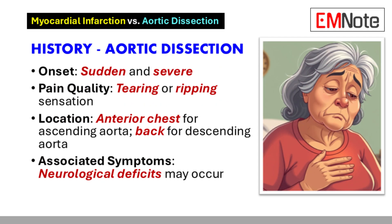In contrast, aortic dissection presents with sudden and severe chest pain. Patients often describe the sensation as tearing or ripping. The pain reaches maximum intensity within minutes and may migrate as the dissection progresses. Anterior chest pain is more likely with involvement of the ascending aorta, while back pain is more common with descending aorta involvement. These distinct characteristics help differentiate aortic dissection from myocardial infarction.